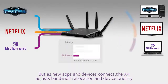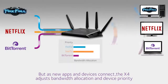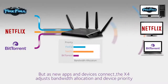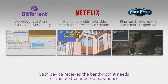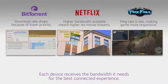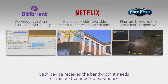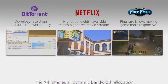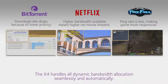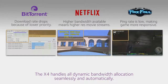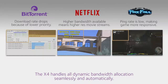But now, when the Netflix video and the online game begin, the X4 adjusts the bandwidth allocation, giving less bandwidth and lower priority to the BitTorrent download. The X4's dynamic QoS prioritizes the connected devices, making sure each gets the bandwidth it needs for the best connected experience. The X4 handles all this dynamic bandwidth allocation seamlessly and automatically — there's no setup or user configuration required.